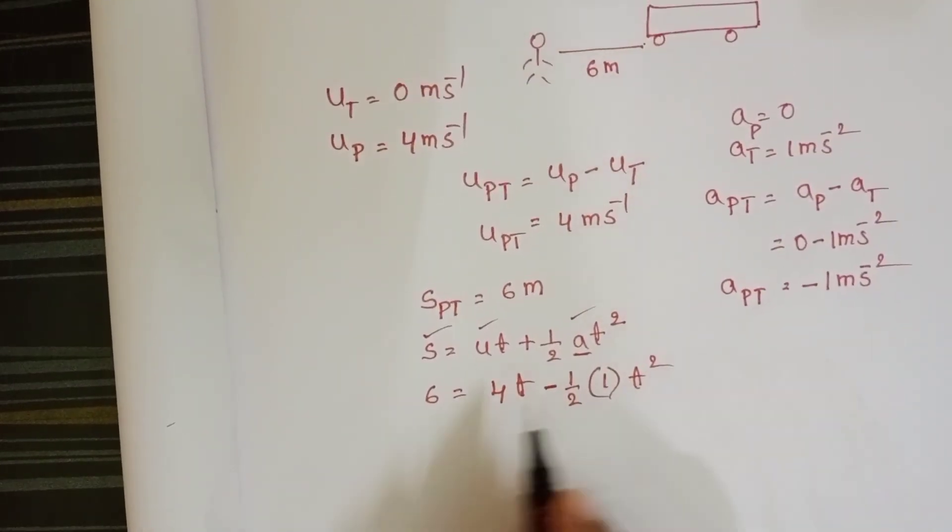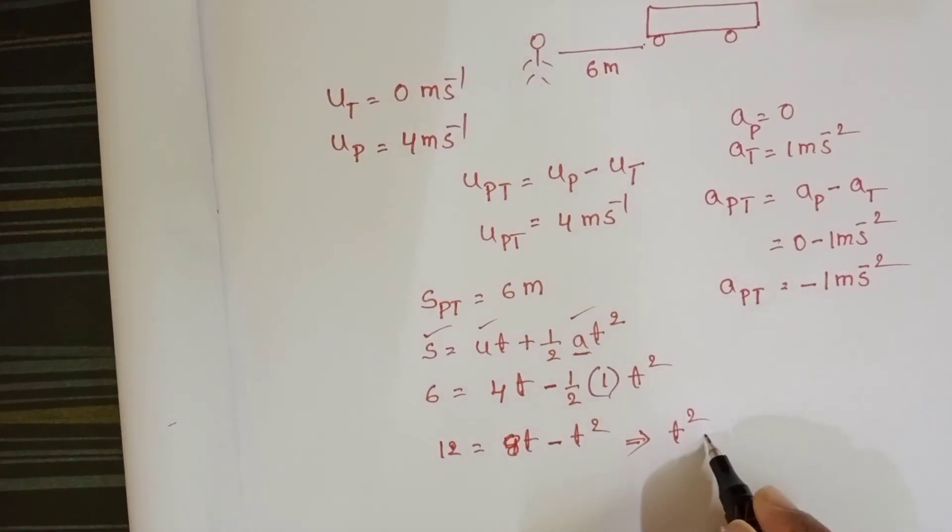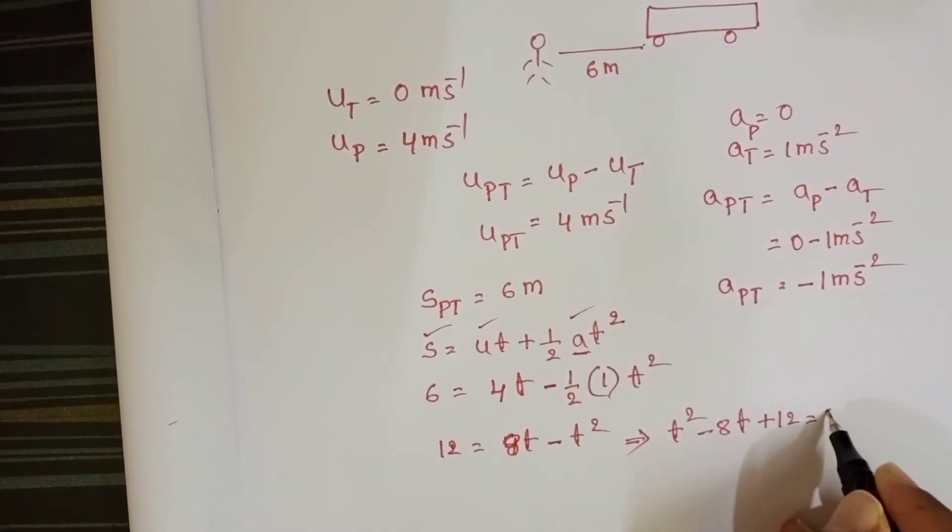Solve this equation. Here, LCM is 2. 12 is equals to 8t minus t squared. And from this, t squared minus 8t plus 12 is equals to 0.